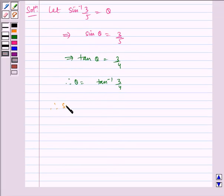Therefore sin inverse of 3 by 5 is equal to tan inverse of 3 by 4, which is equal to theta.